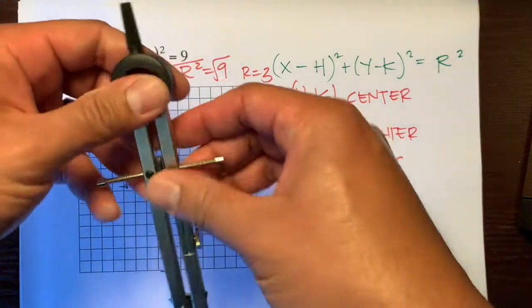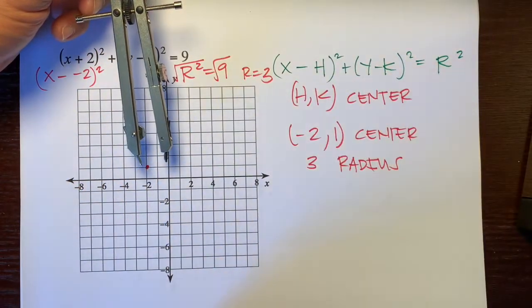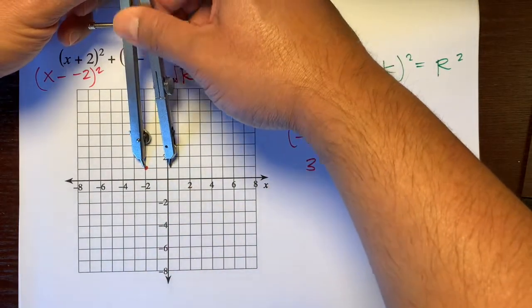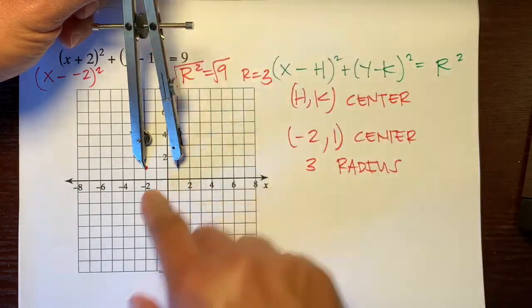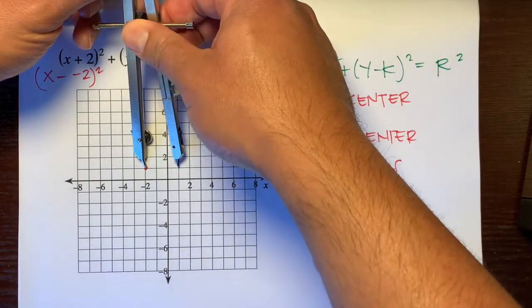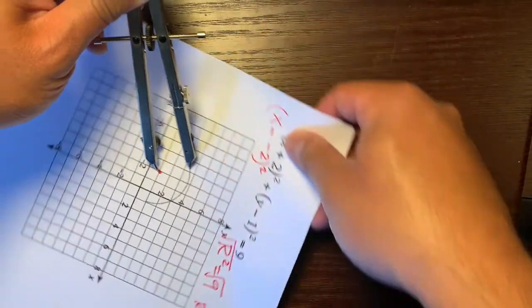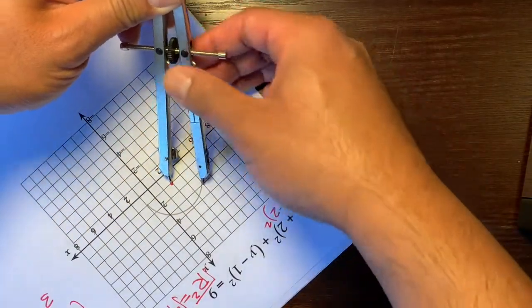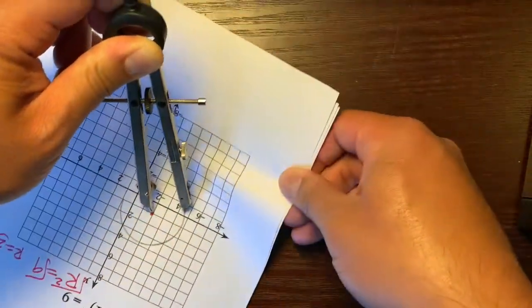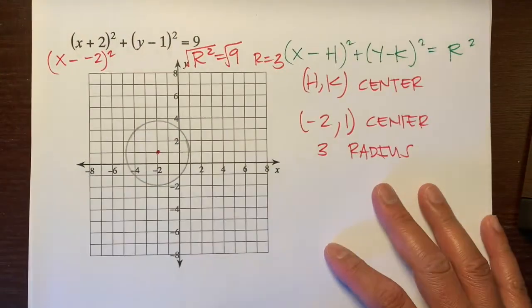Our radius is 3. That means that every point on the circle is 3 units away from the center. So we're going to take our compass. Here's the metal part, which will represent the center. Don't push too hard because that'll hurt. And then we're going to open up our compass so that it's 3 units. This from here to here represents our radius. It's a little easier to rotate the paper instead of rotating the compass. So I'm going to rotate the paper.